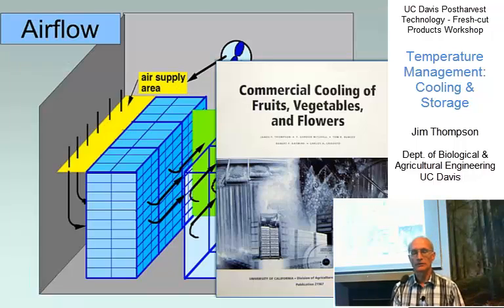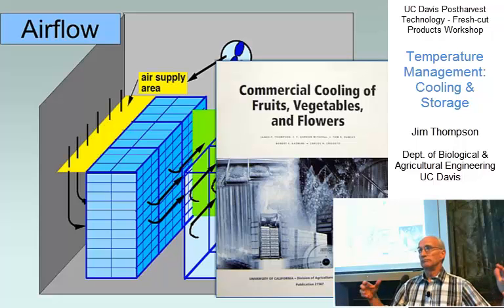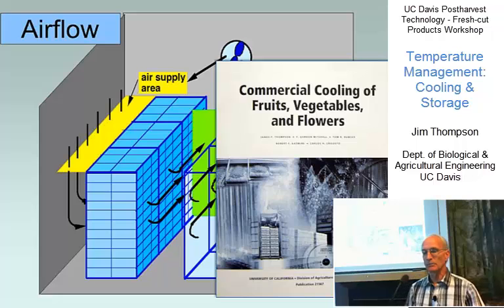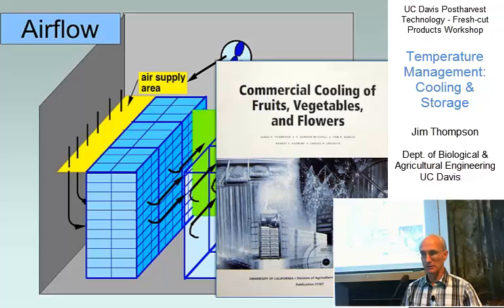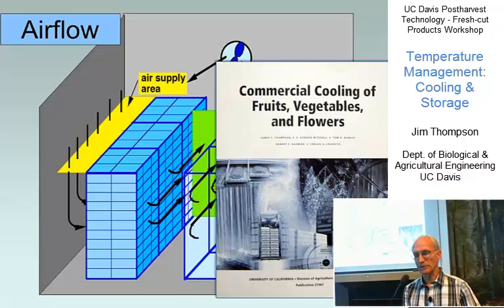There are a lot of details on designing the forced air cooler in terms of air supply area, air return areas, air flow rate, static pressure, refrigeration amounts, and things like that. All those details are given in the Commercial Cooling of Fruits, Vegetables, and Flowers book, which you have a copy of in your bag. Forced air cooling is covered quite completely there with calculations and background information.